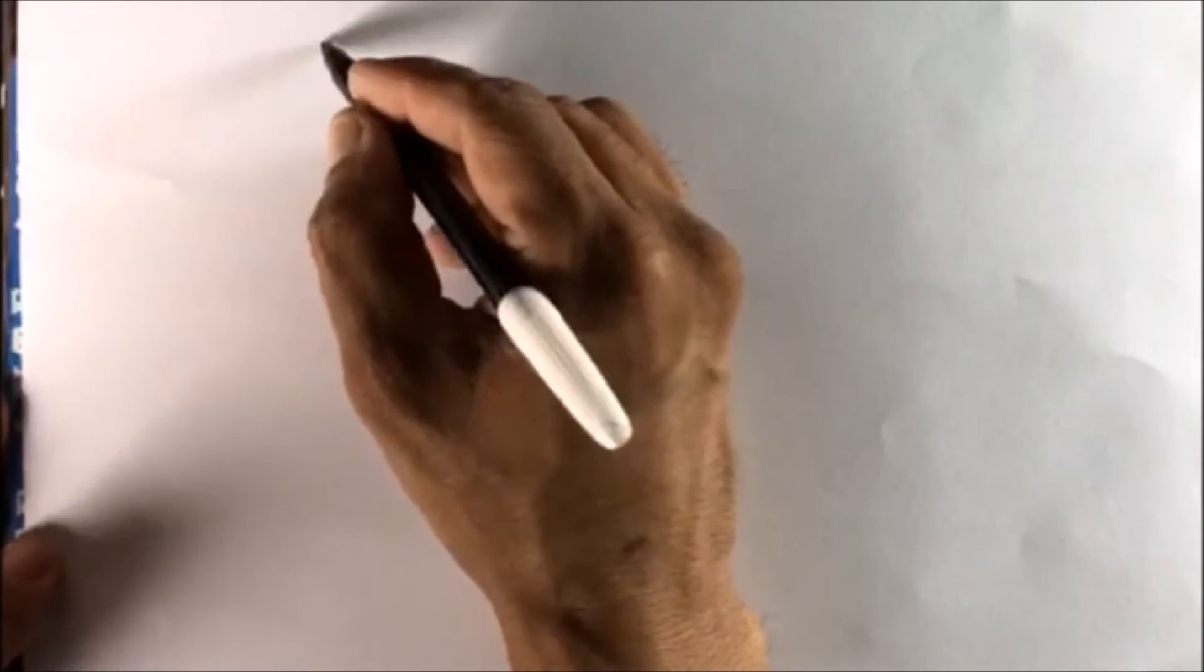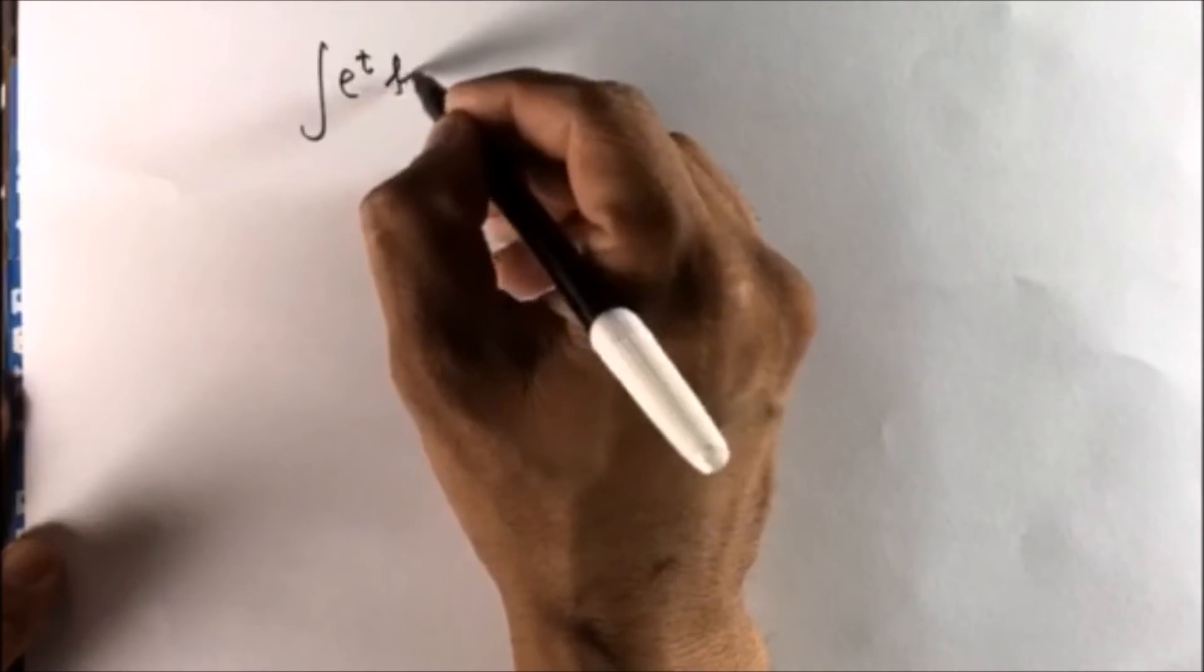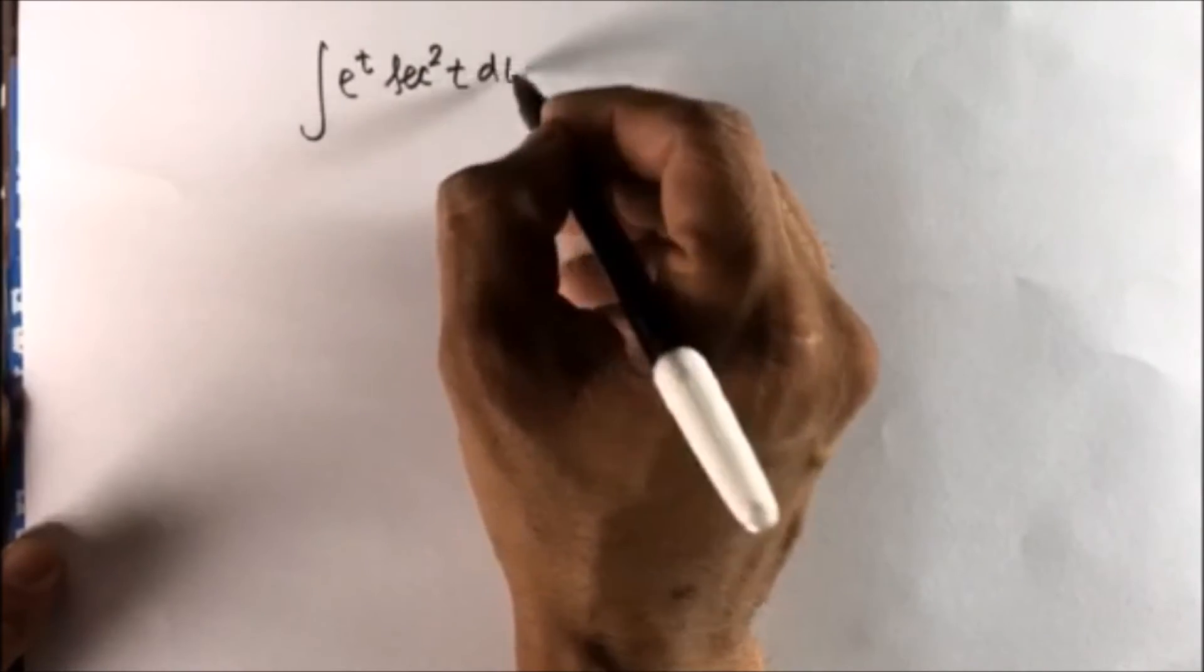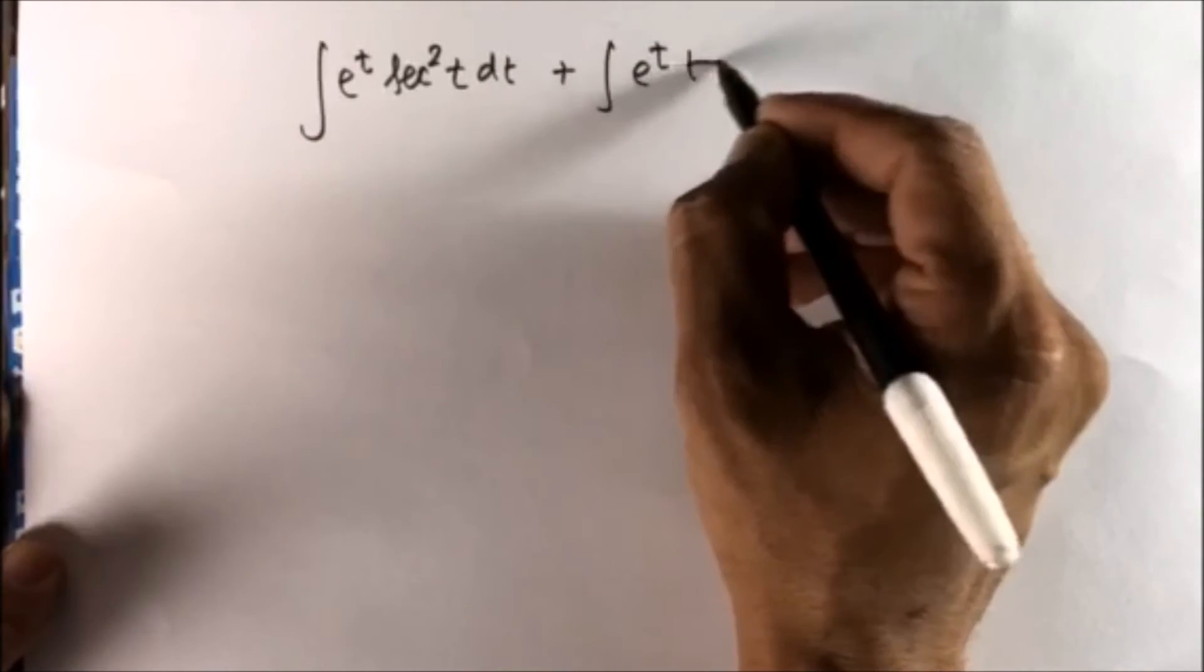So we have e to the power t secant squared t dt and e to the power t tan t.